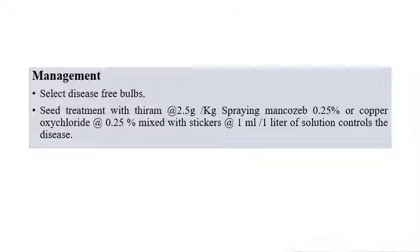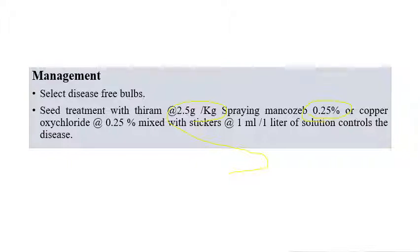For management of Purple Blotch: select disease-free bulbs, and do seed treatment with Thiram at 2.5 grams per kilogram of seeds. Spraying Mancozeb at 0.25 percent or Copper Oxychloride at 0.25 percent, mixed with stickers at 1 ml per liter of solution, can effectively control the disease.